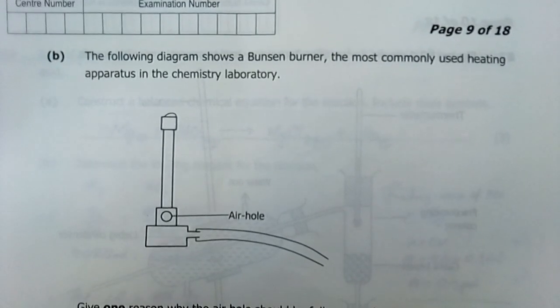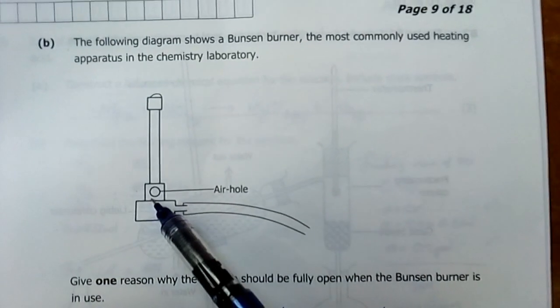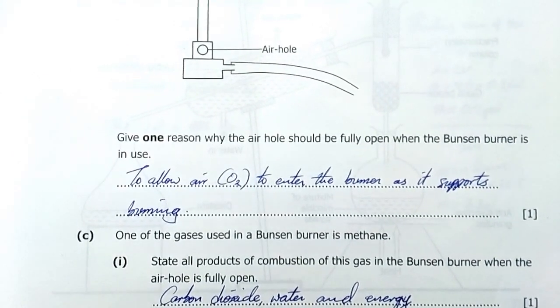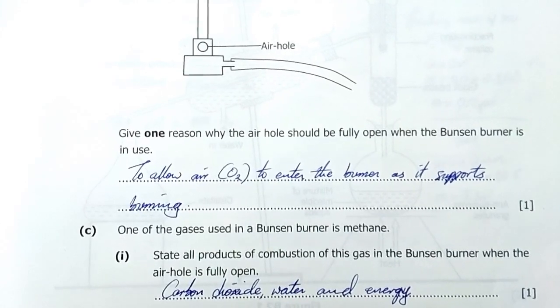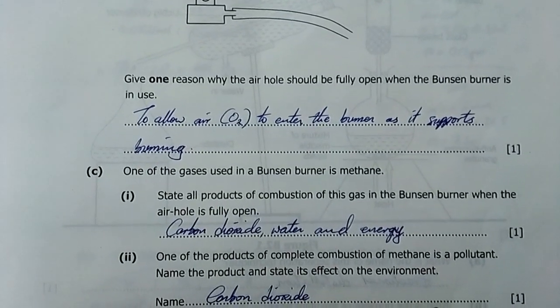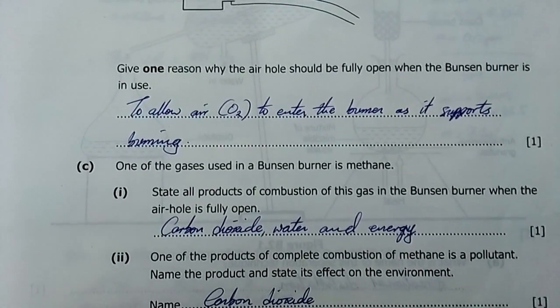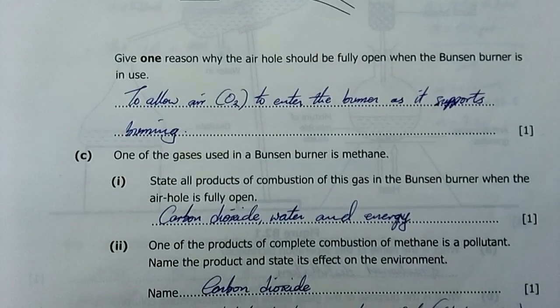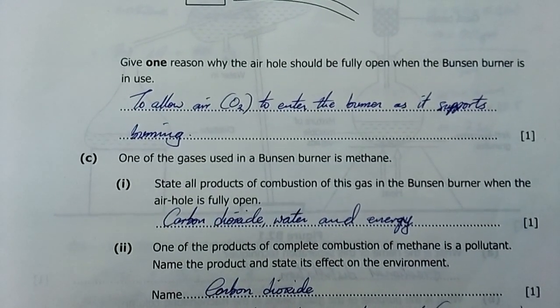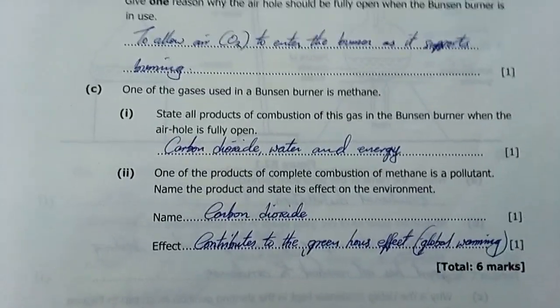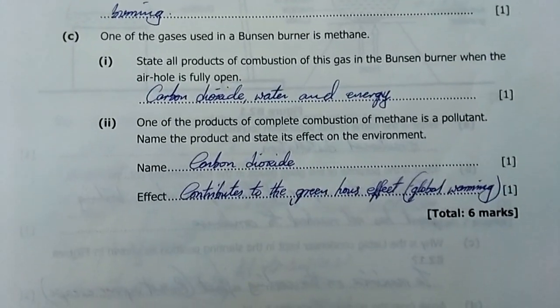The following diagram shows the Bunsen burner, the most commonly used heating apparatus in the chemistry laboratory. Give one reason why the air hole should be fully open when the Bunsen burner is in use. To allow air or oxygen to enter the burner as it supports burning. One of the gases used in Bunsen burner is methane, the smallest hydrocarbon. State products of combustion of this gas when the hole is fully open, therefore complete combustion. The products are carbon dioxide, water, and energy in the form of light and heat.